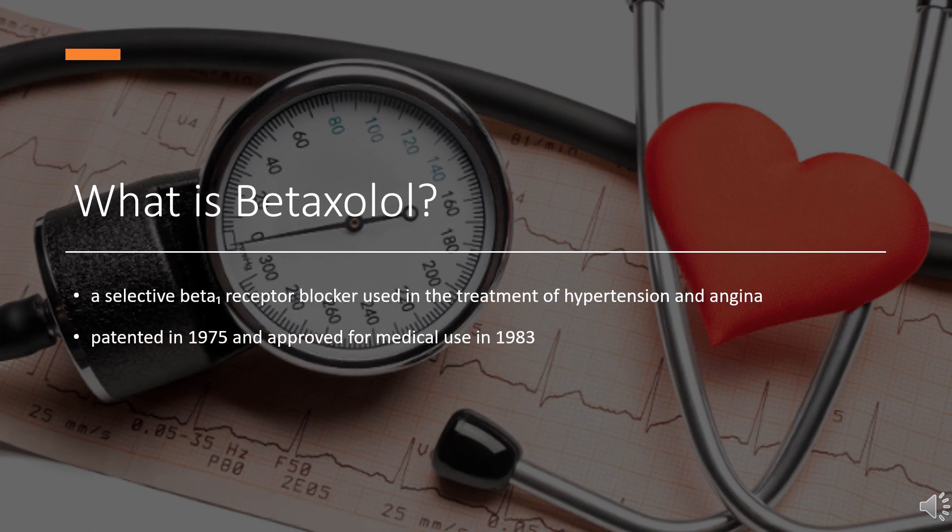What is betaxolol? Betaxolol is a selective beta-receptor blocker used in the treatment of hypertension and angina. Being selective for beta-receptors, it typically has fewer systemic side effects than non-selective beta-blockers — for example, not causing bronchospasm as timolol may. It was patented in 1975 and approved for medical use in 1983.